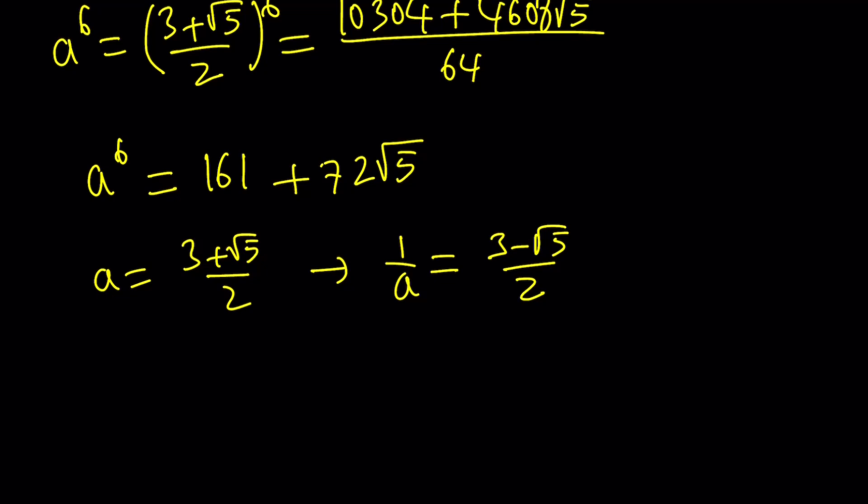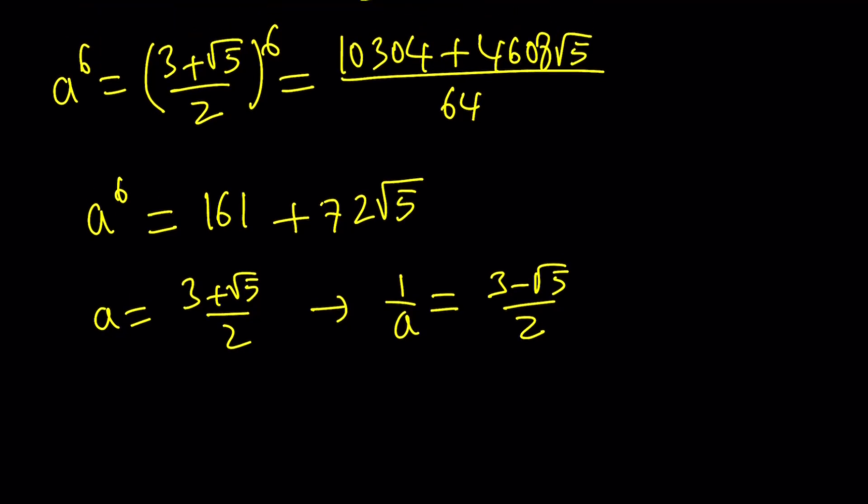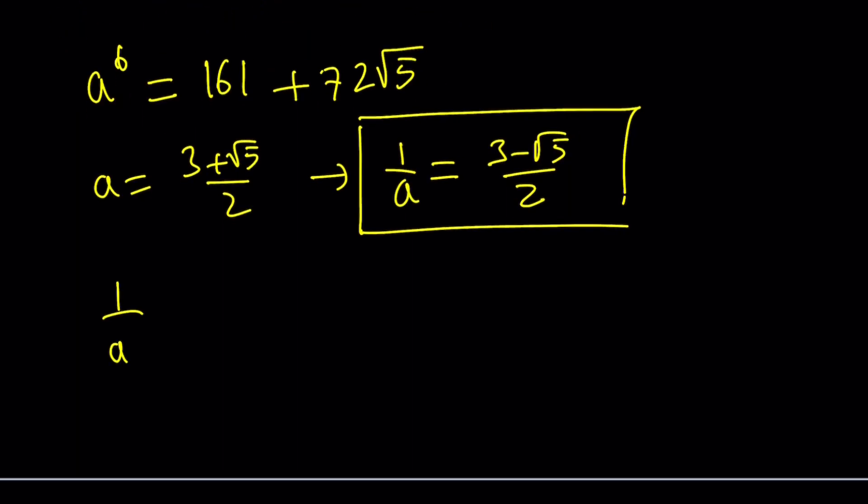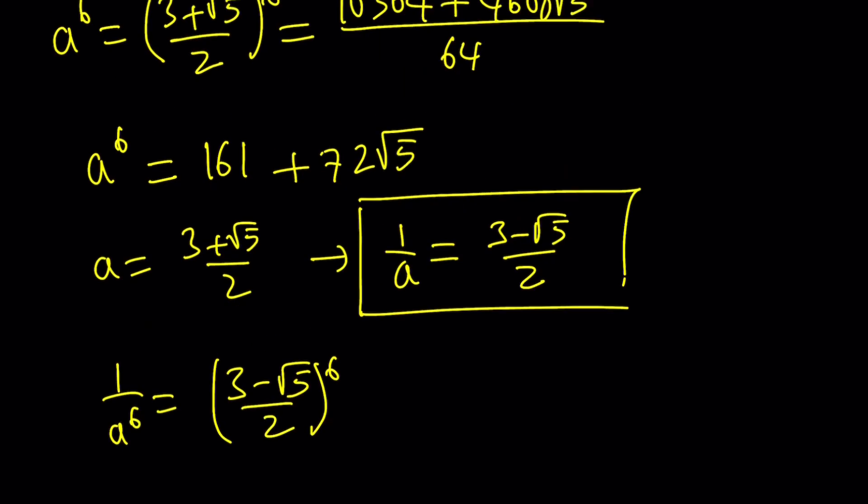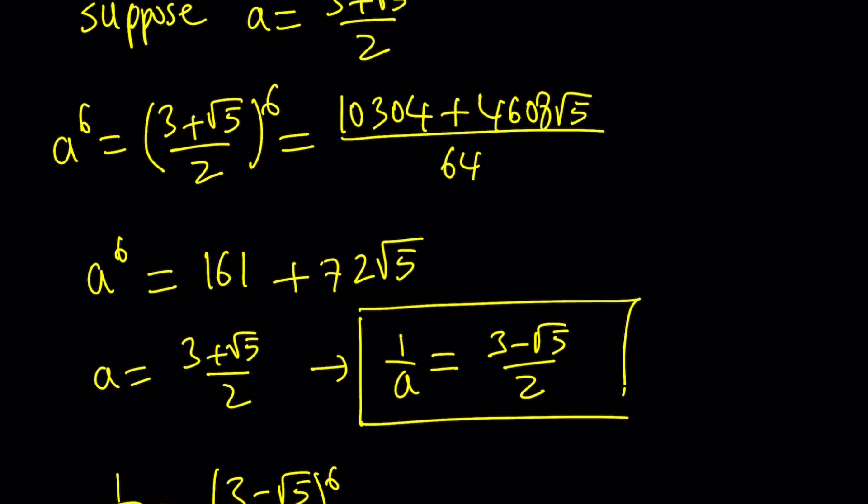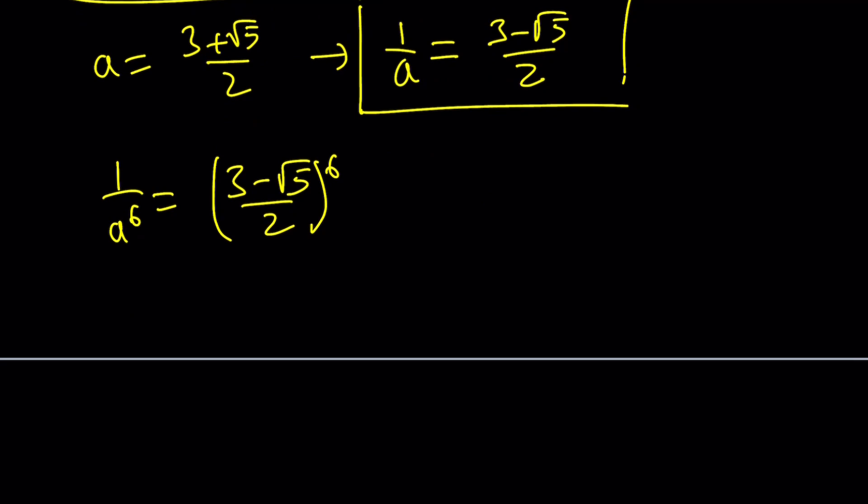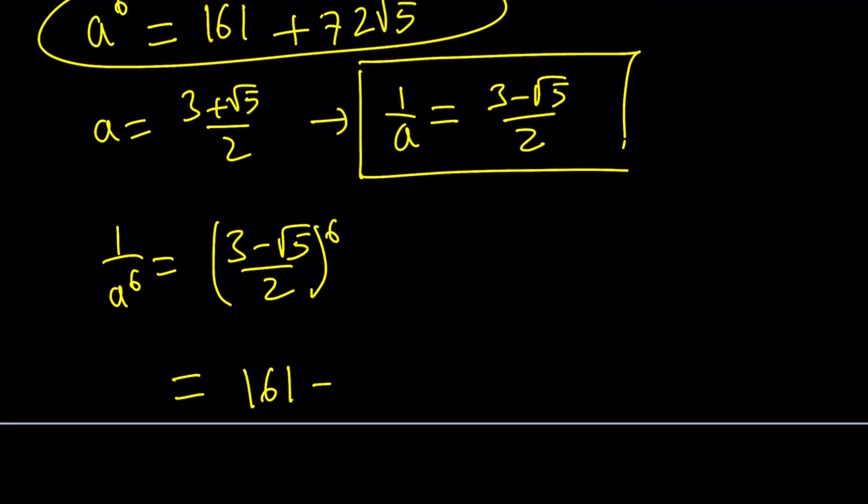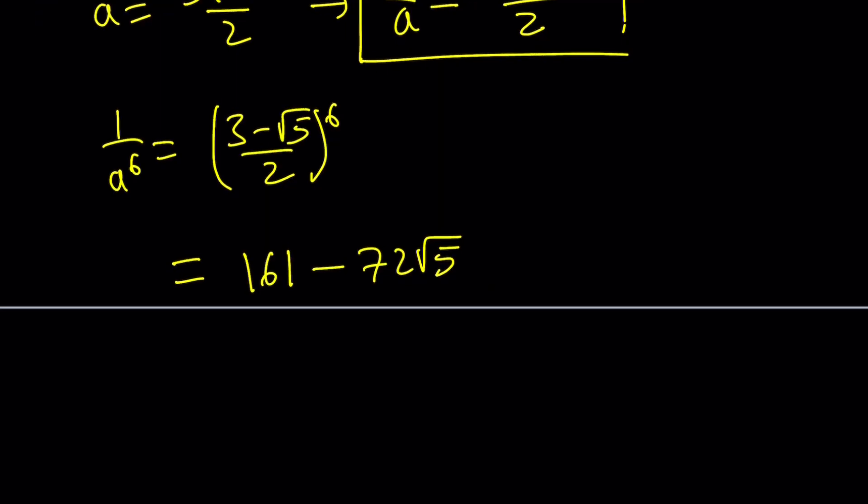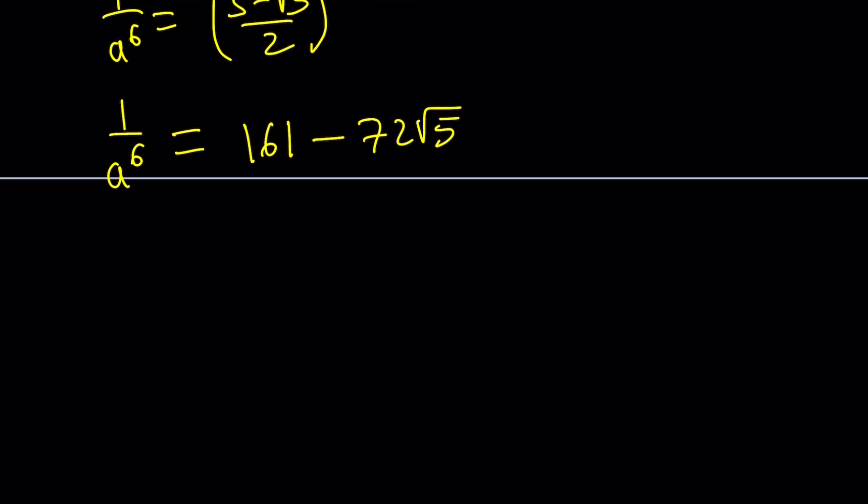How does this help? Well, I was able to raise this a to the 6th power. Now, I'm going to do this to the 6th power. So 1 over a to the 6 is going to be 3 minus root 5 over 2 to the 6th power. When you simplify this, you're going to get 161 minus 72 root 5, because of the minus sign. So now I got a to the 6th and 1 over a to the 6th, so I've got to add them.